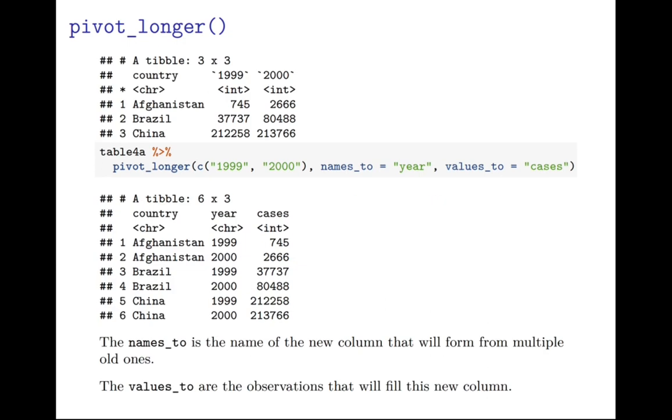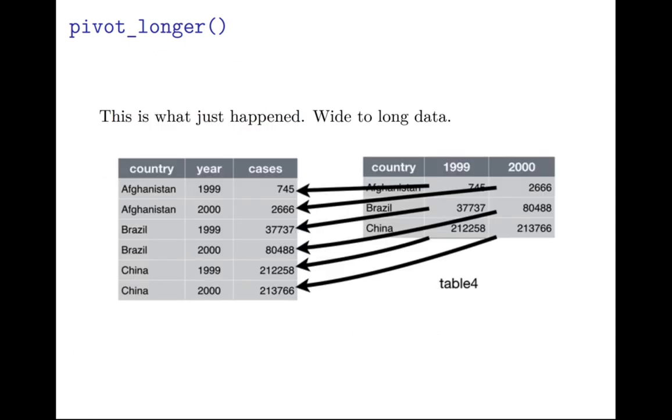So let's see what happens if we actually try it. I've printed table 4a at the top so you can see the before, and then you use this pivot_longer code where you do the pivot_longer and you're saying we want to concatenate that 1999 and 2000 columns and turn it into one column named year with the values called cases. You can see the output here on the bottom. To remind you, the names_to is the name of the new column that will form from the multiple old ones, and the values_to are the observations that will fill this new column. This is what just happened - you took your wide data in table 4a and you made it longer.